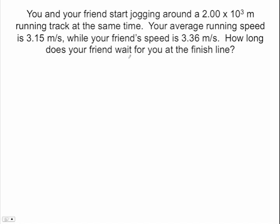Your average running speed is 3.15 meters per second, while your friend's speed is 3.36 meters per second. How long does your friend wait for you at the finish line? Okay, so we have a couple of things. This is our distance. We are both running the same distance. Okay, this is your speed. I'm going to call that V1.